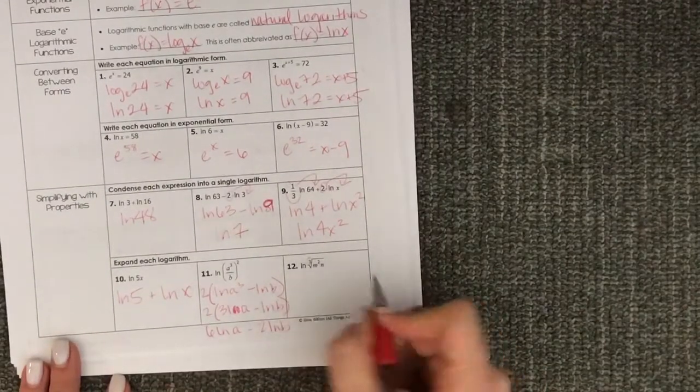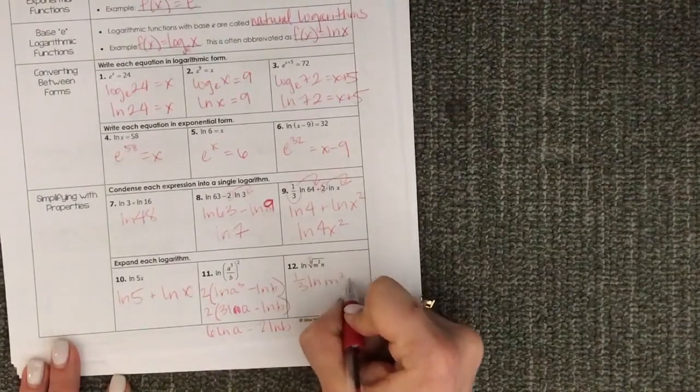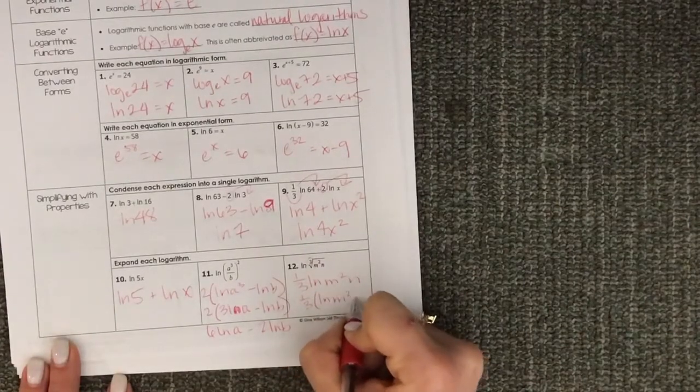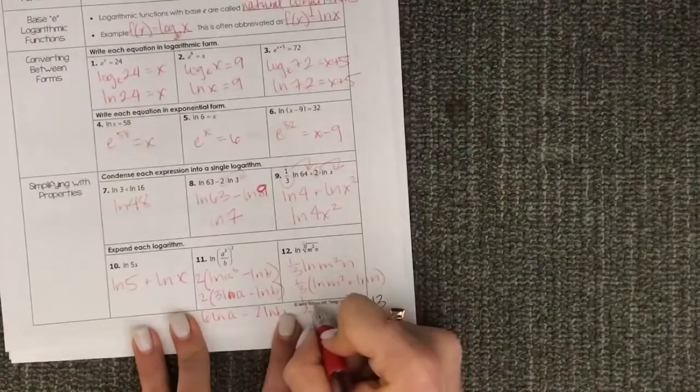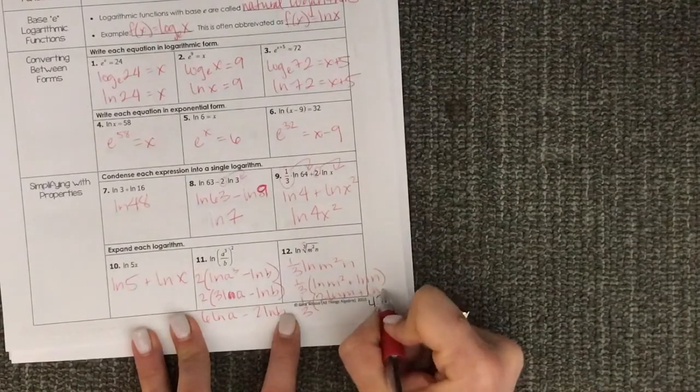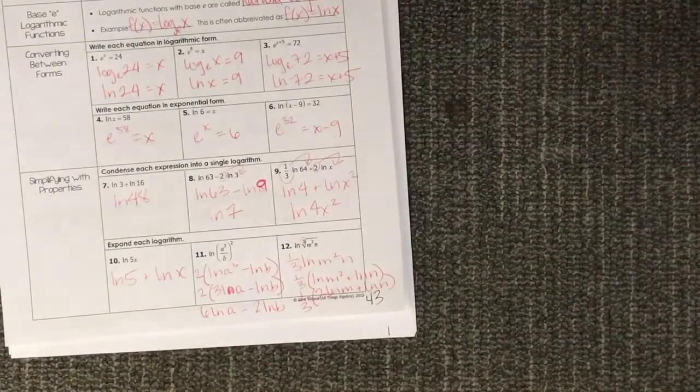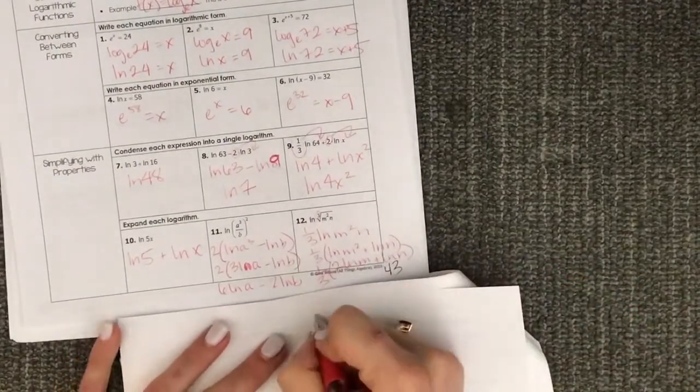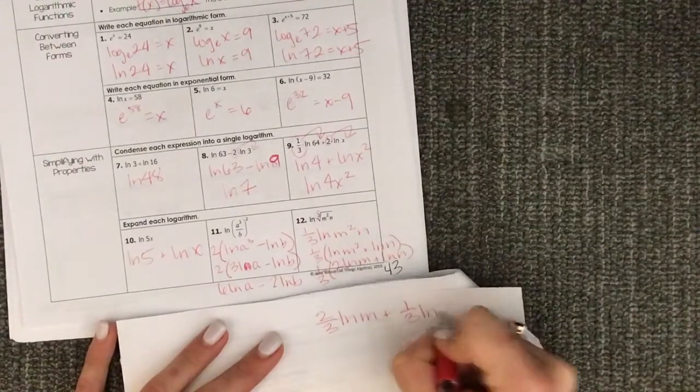And then here think of this as a 1/3 power. Bring that down. So we have this. And then we want to expand. That'd be LN of M squared plus LN of N. So then that'd be 1/3 times 2 LN of M plus LN of N. I'm going to get a blank piece of paper here because this is getting messy. So then that would be 2/3 LN of M plus 1/3 LN of N.